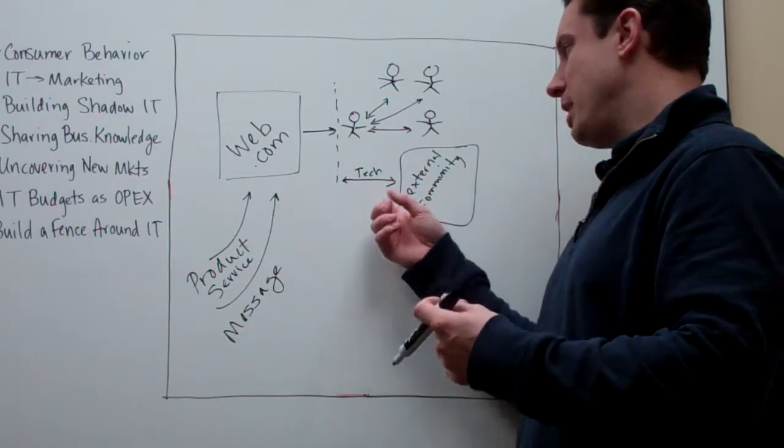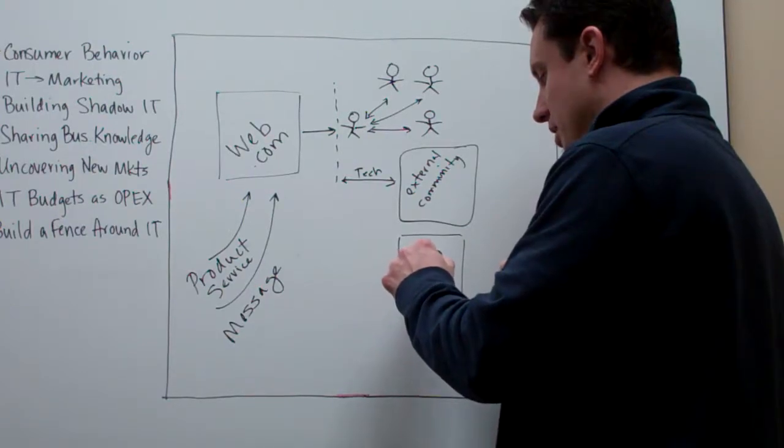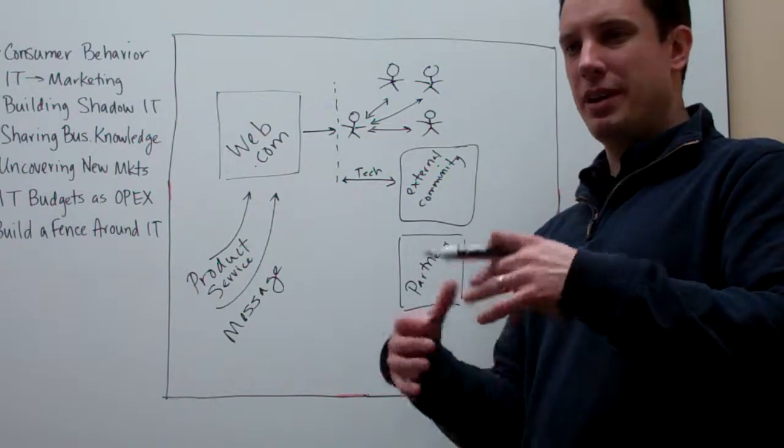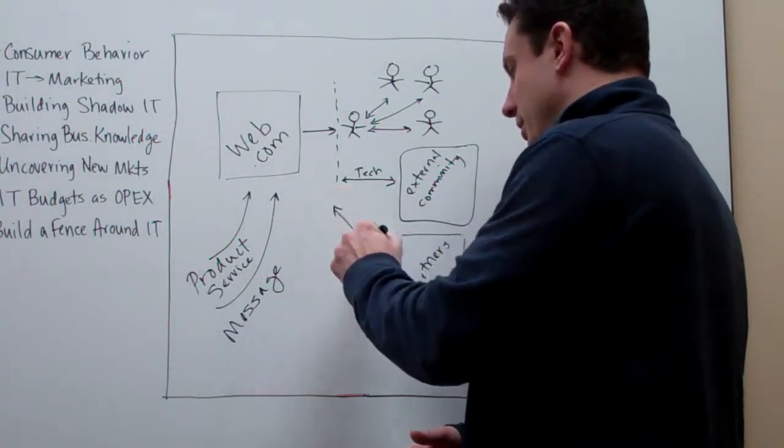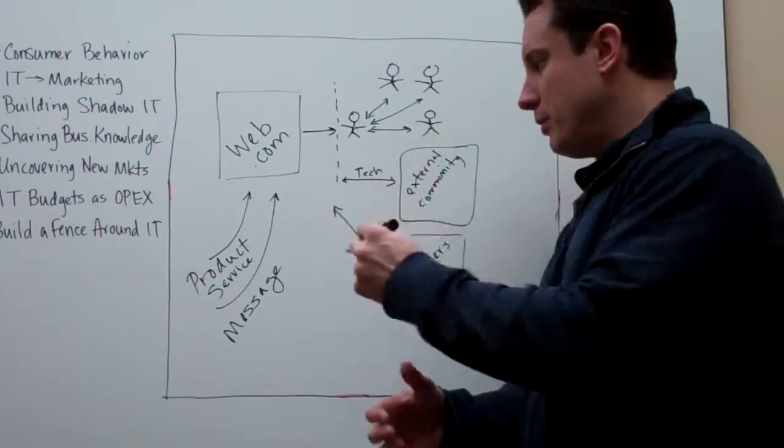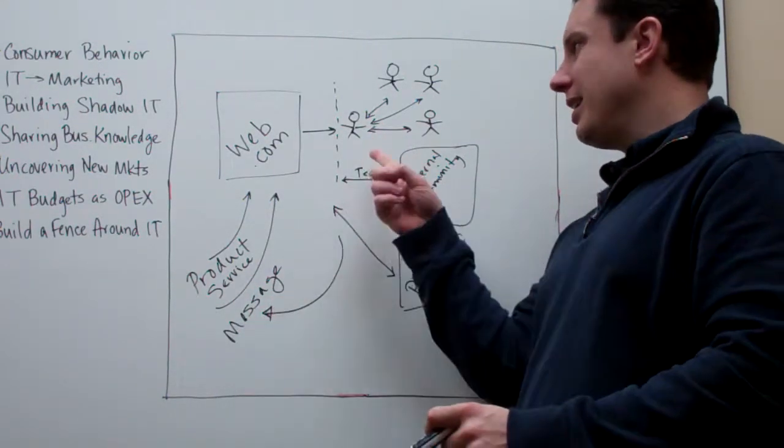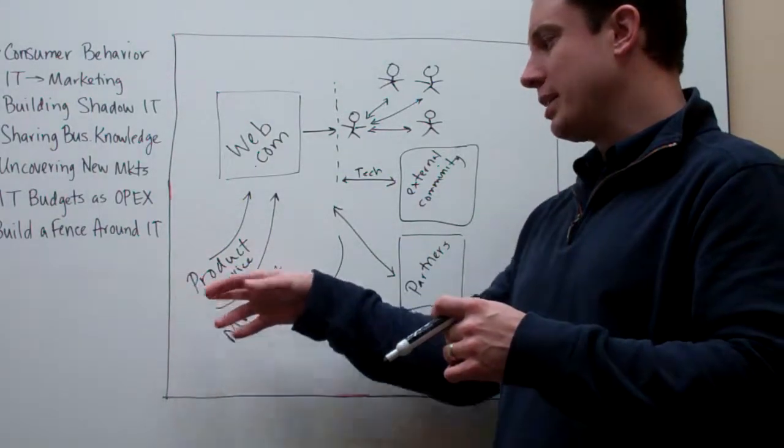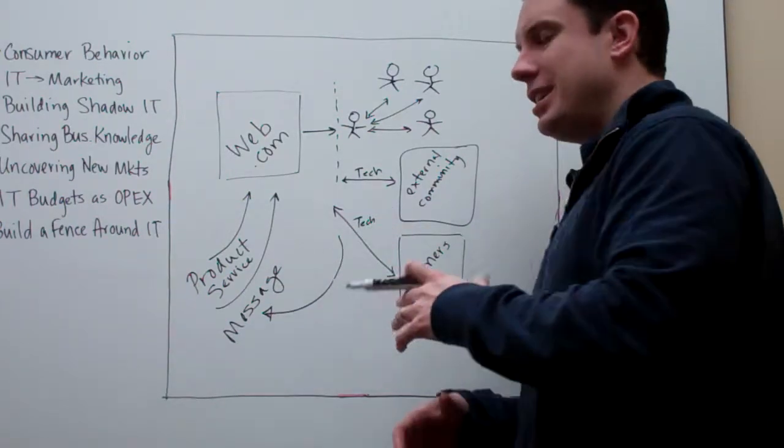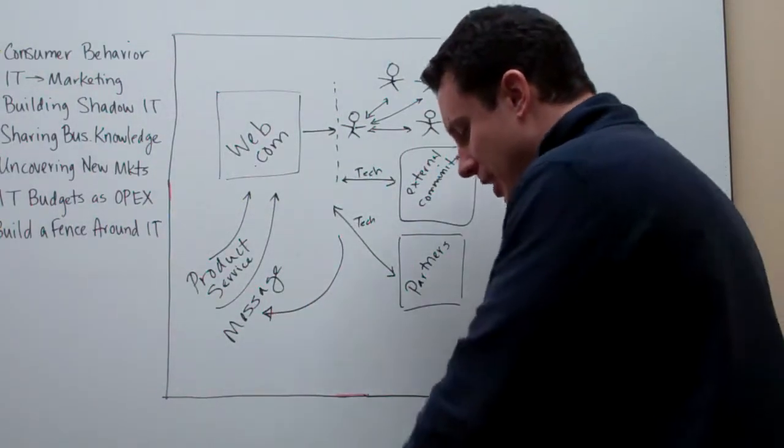This might be market research, traditional market research. This might be your partners and their ability to collect information about sales, logistics, manufacturing, whatever. You want that to be part of what you're doing. You want to be able to collect these types of information, and you want that to help you understand how to shape your message, how to participate in the message. You want to know how to shape your product and service portfolio. This is where you're going to need technology, an IT organization or an external technology partner to help you with these things.